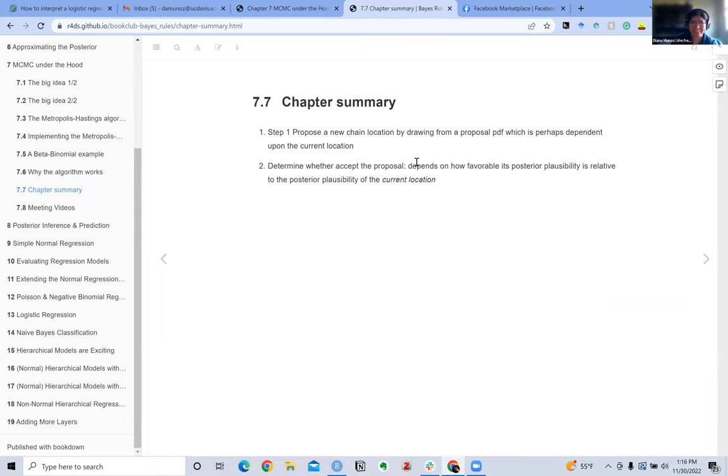Basically, the whole overarching idea of these MCMC samplers is that they propose a new chain location by drawing from a proposal posterior, and then we determine whether that has a sufficient acceptance probability so that you move on to that new location. That took me like 10 minutes.